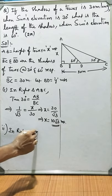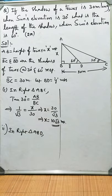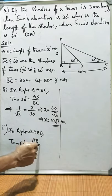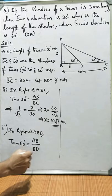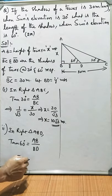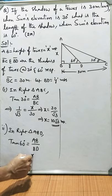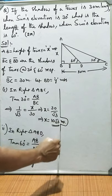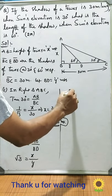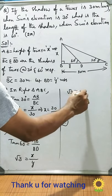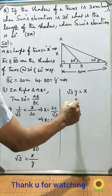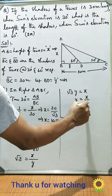In right triangle ABD, tan 60 is equal to opposite side AB by adjacent side BD. Tan 60 equals root 3. AB is x and BD is y. Root 3 times y equals x. Therefore, y equals x by root 3.